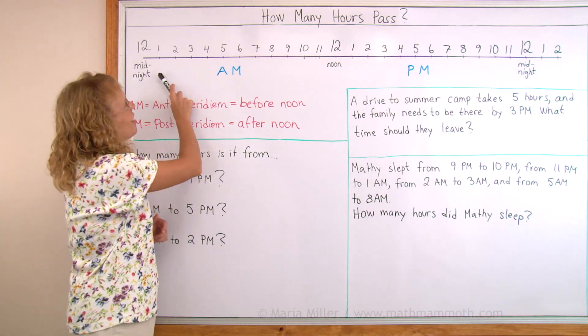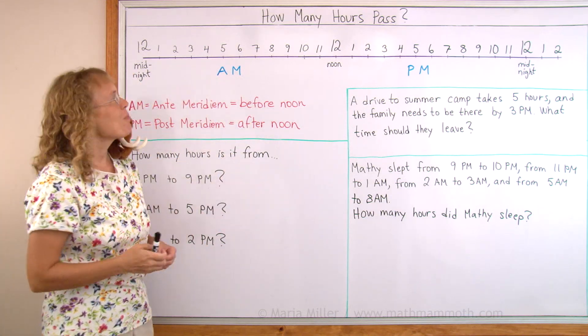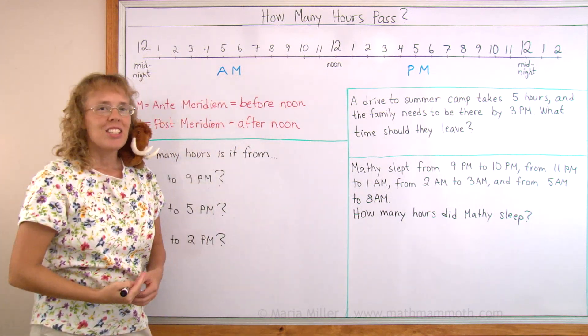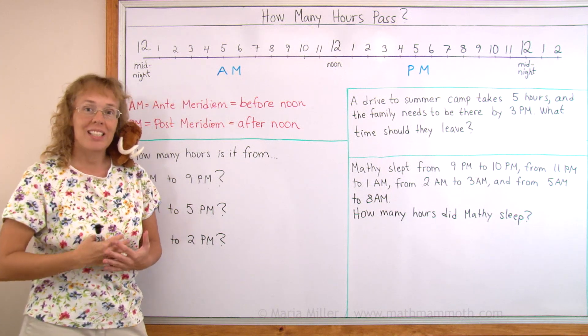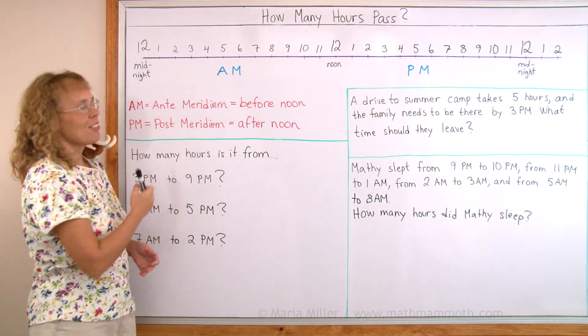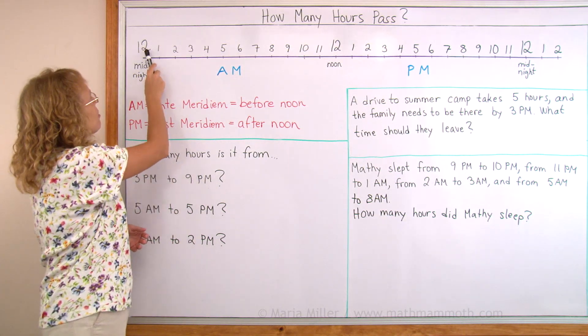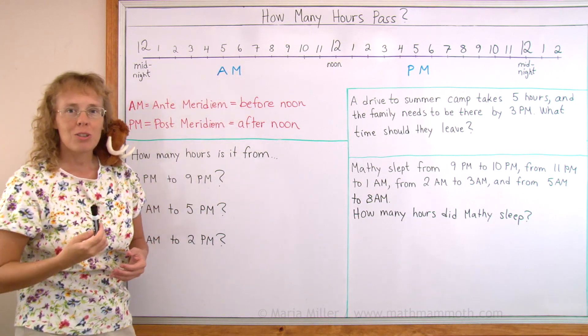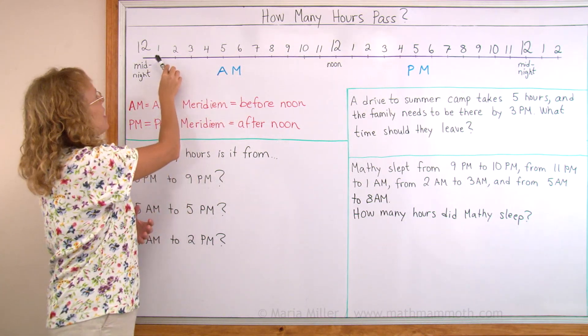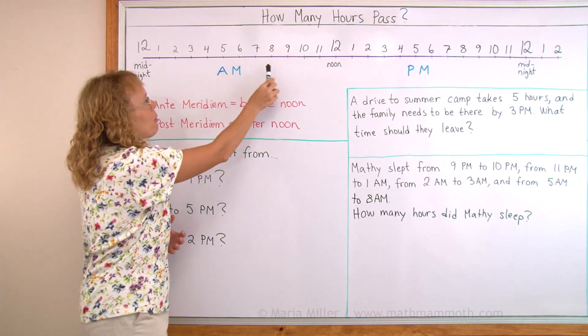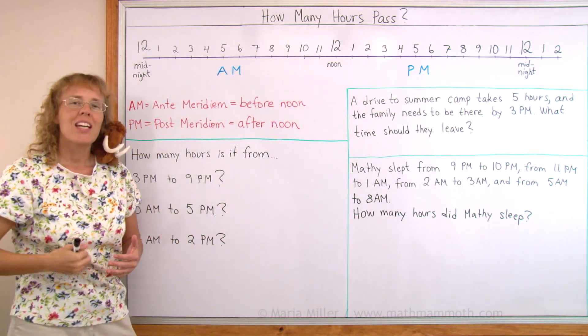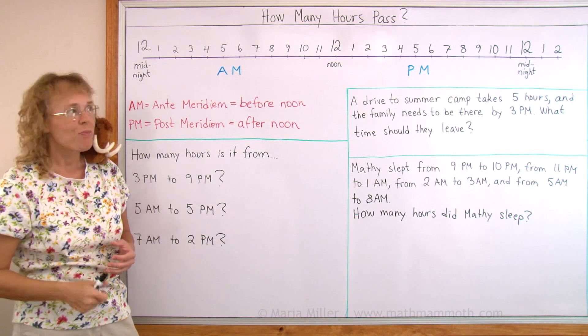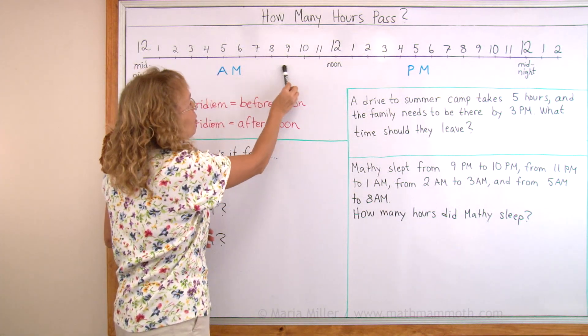First, let's study again this timeline that starts at 12 midnight and goes all the way to 12 midnight again. So it has a complete day and a complete night there. Midnight is of course night time. And after 12 midnight we have 1 o'clock, 2 o'clock, 3 o'clock and so on. All those hours are called AM: 1 AM, 2 AM, 3 AM and so on all the way up till 11 AM. AM means ante meridiem, comes from Latin and it means before noon.